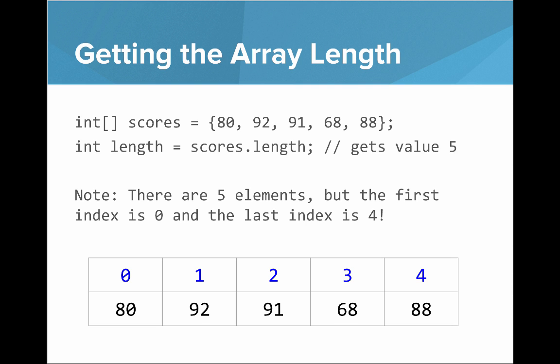If we want to get the array length, the way we can do that is with a property on the array called length. So we'd say int length equals scores.length, and that will get the value five. So remember there's five elements, but the first is zero and the last is four.